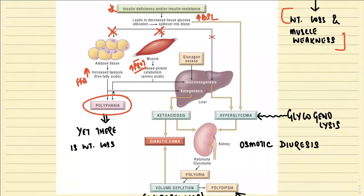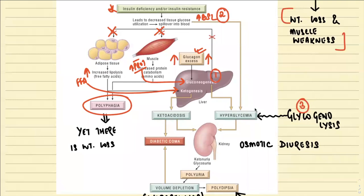Excess fatty acids go into the liver and undergo fatty acid oxidation, leading to the formation of ketone bodies. Excess protein is diverted to the liver for gluconeogenesis, driven by counter-regulatory hormones like glucagon. Gluconeogenesis, along with elevated blood sugar and glycogenolysis, contributes to hyperglycemia. Because of excessive fatty acid oxidation, there is also ketoacidosis, which ultimately can cause diabetic coma.